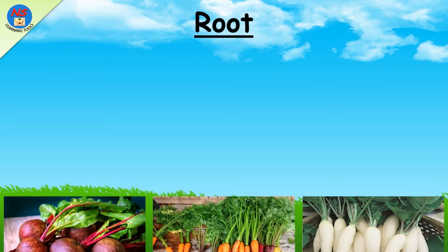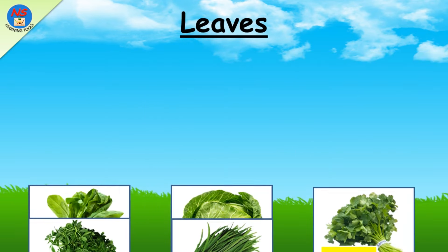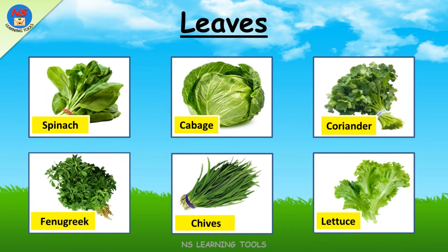Some examples of root plants: beetroot, carrot, radish, onion, ginger, garlic. Some examples of leaf plants: spinach, cabbage, coriander, fenugreek, chives, lettuce.